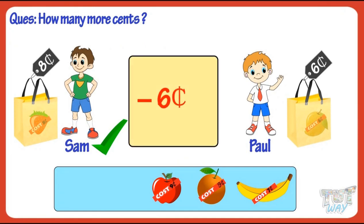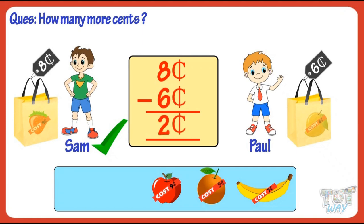Subtract the smaller amount from the bigger amount to get the difference. 8 cents minus 6 cents, you get 2 cents. So Sam spent 2 more cents than Paul.